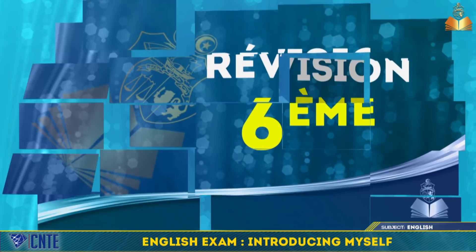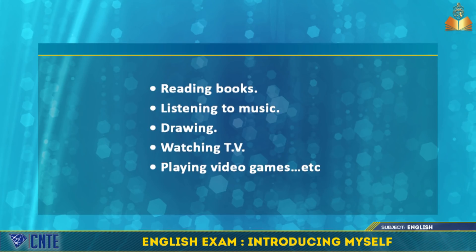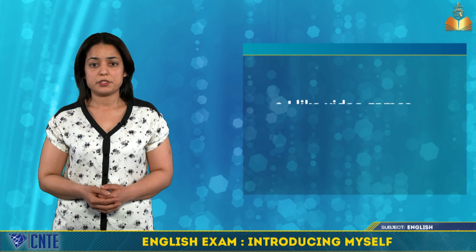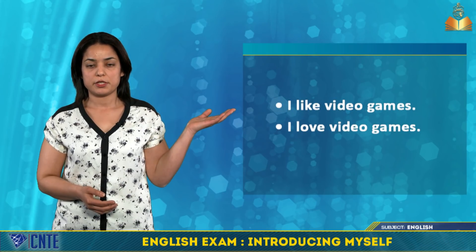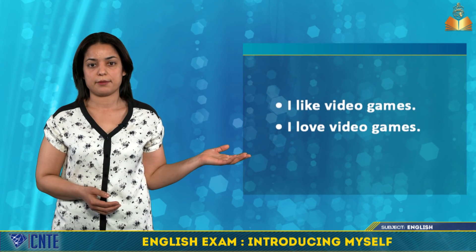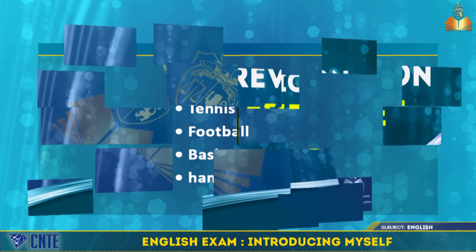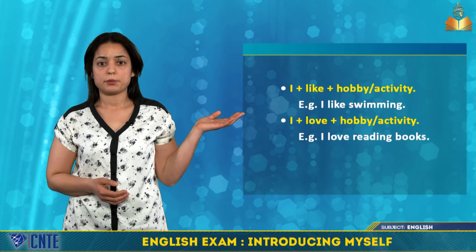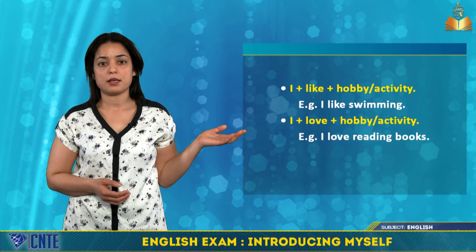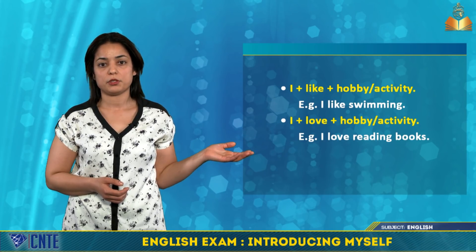You can also tell your new friend about your favorite hobbies or activities. For example, you enjoy reading books, listening to music, drawing, watching TV, or playing video games. To talk about hobbies: I like playing video games, or I love video games. You can also have activities like swimming, playing tennis, football, basketball, handball. The rule is: I + like + hobby, or I + love + hobby.